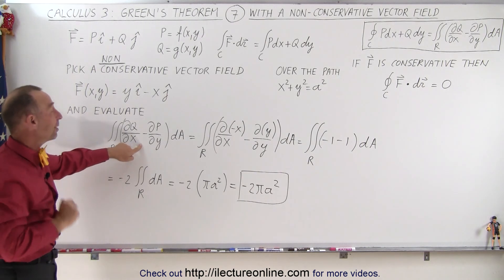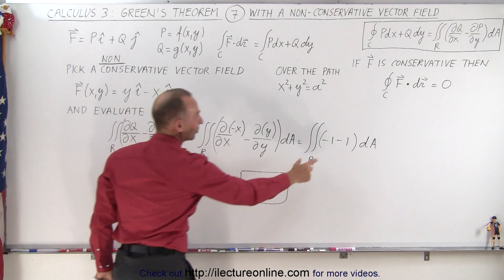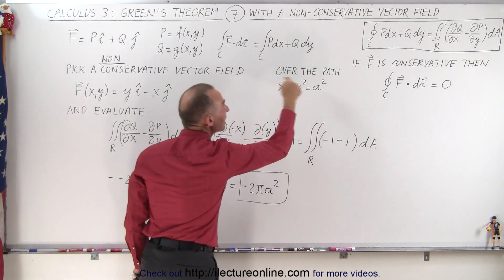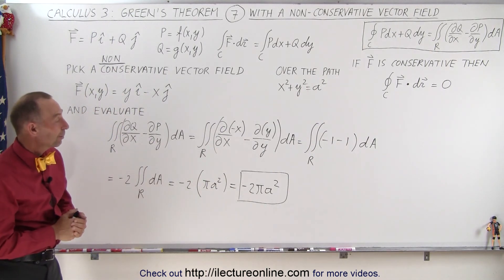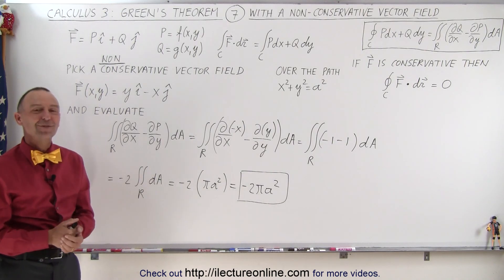When we evaluate it, this of course will then not be zero, as it was in the previous video. And notice that if we have a constant here, it simply then becomes evaluating the area of the path enclosed. And that's how we deal with Green's theorem when we have a non-conservative vector field. That's how it's done.